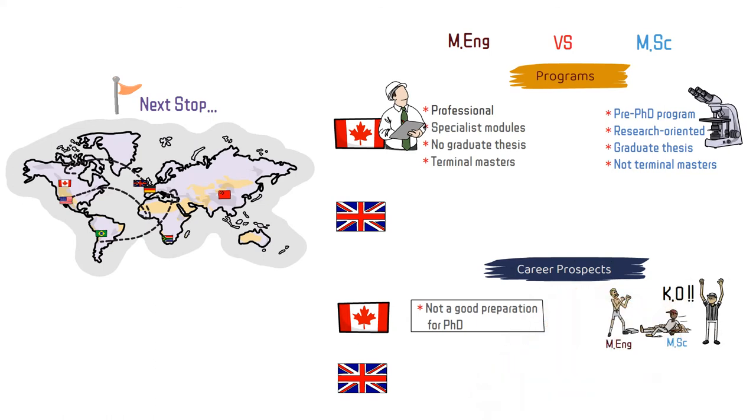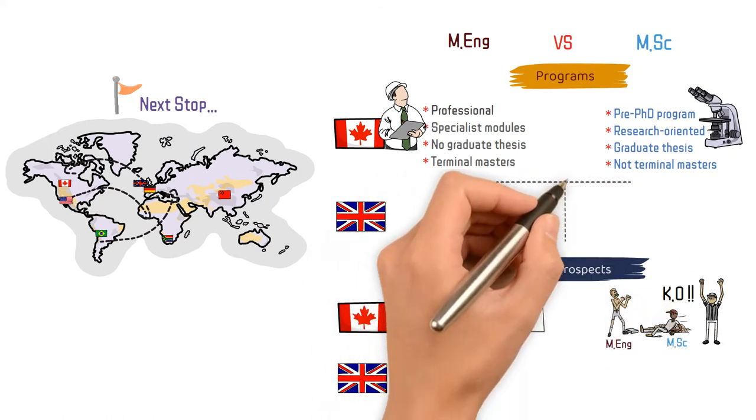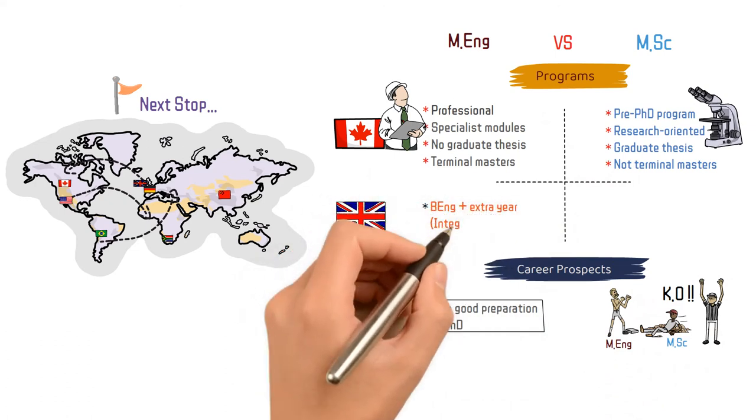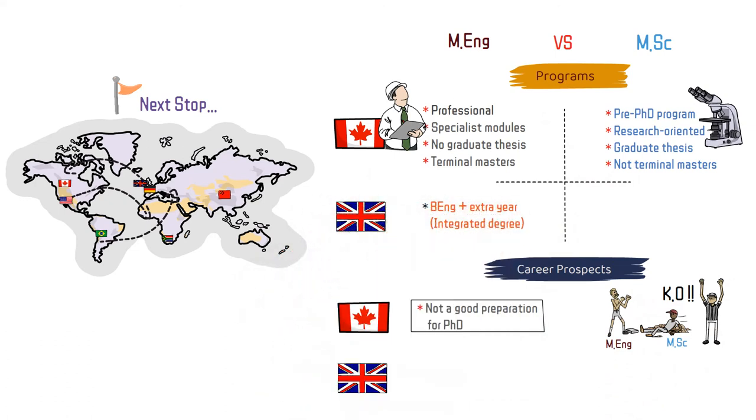Let's continue with the case of United Kingdom this time. In many universities in the United Kingdom, the Master in Engineering is an integrated undergraduate master. It simply means a bachelor degree with an extra year.